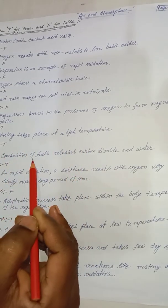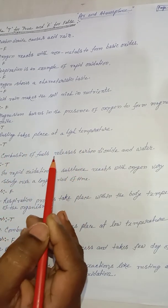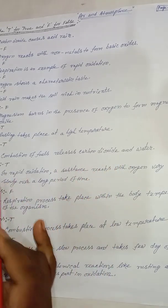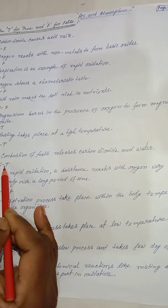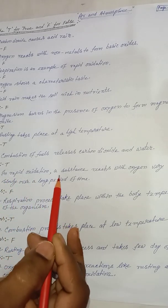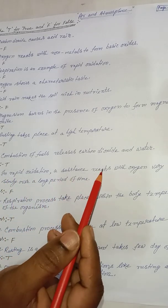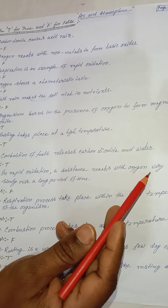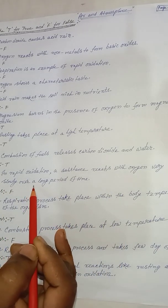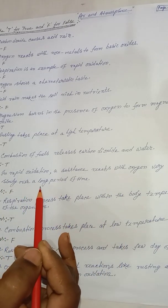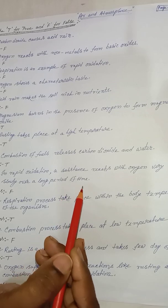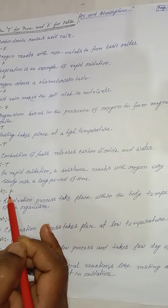The combustion of fuel releases carbon dioxide and water — true. In slow oxidation, a substance reacts with oxygen very slowly over a long period of time — false.